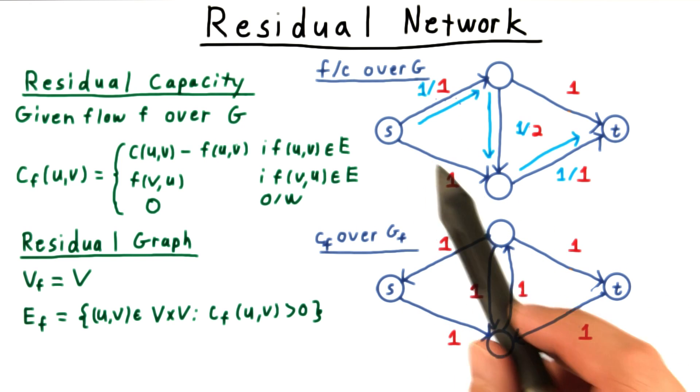This edge here remains the same. We can still send one unit of flow along there.